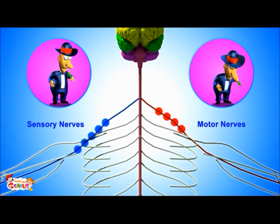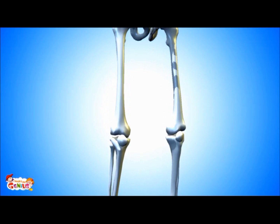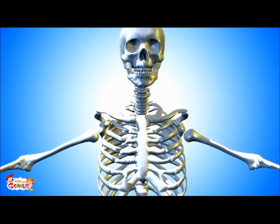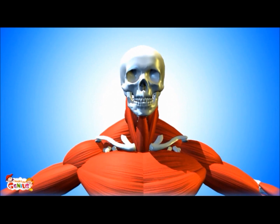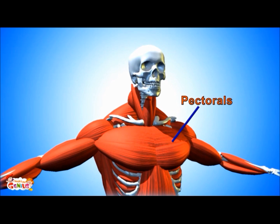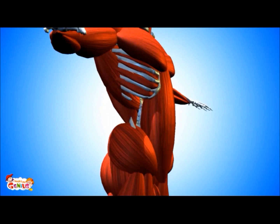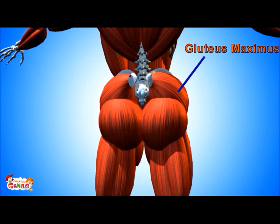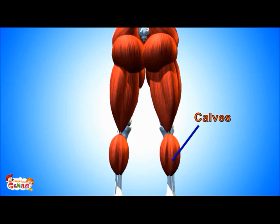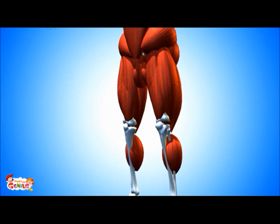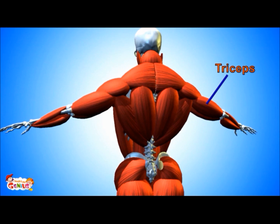Now let's see the major skeletal muscles of our body. These are the pectorals, biceps, gluteus maximus, hamstrings, calves, quadriceps, and triceps.